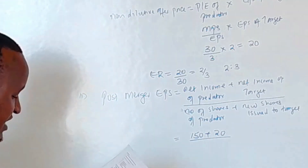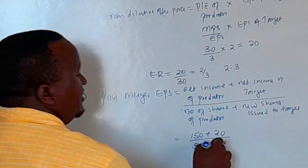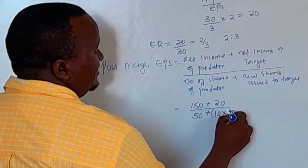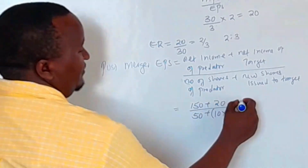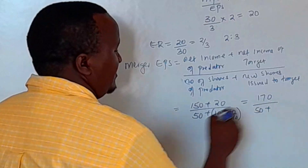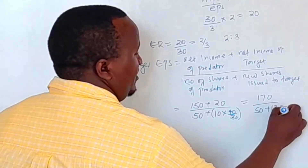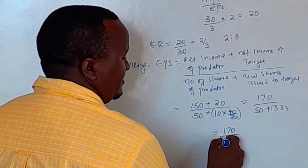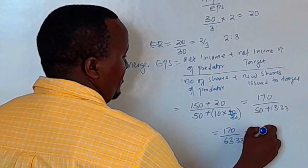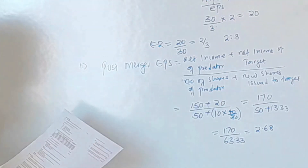Alpha had 50 million outstanding shares and Beta had 10 million. At the agreed offer price of 40, the exchange ratio is 40/30 = 4/3. New shares issued = 10 × (4/3) = 13.33 million. So post-merger EPS = 170 / (50 + 13.33) = 170 / 63.33 = 2.68 as our post-merger EPS.